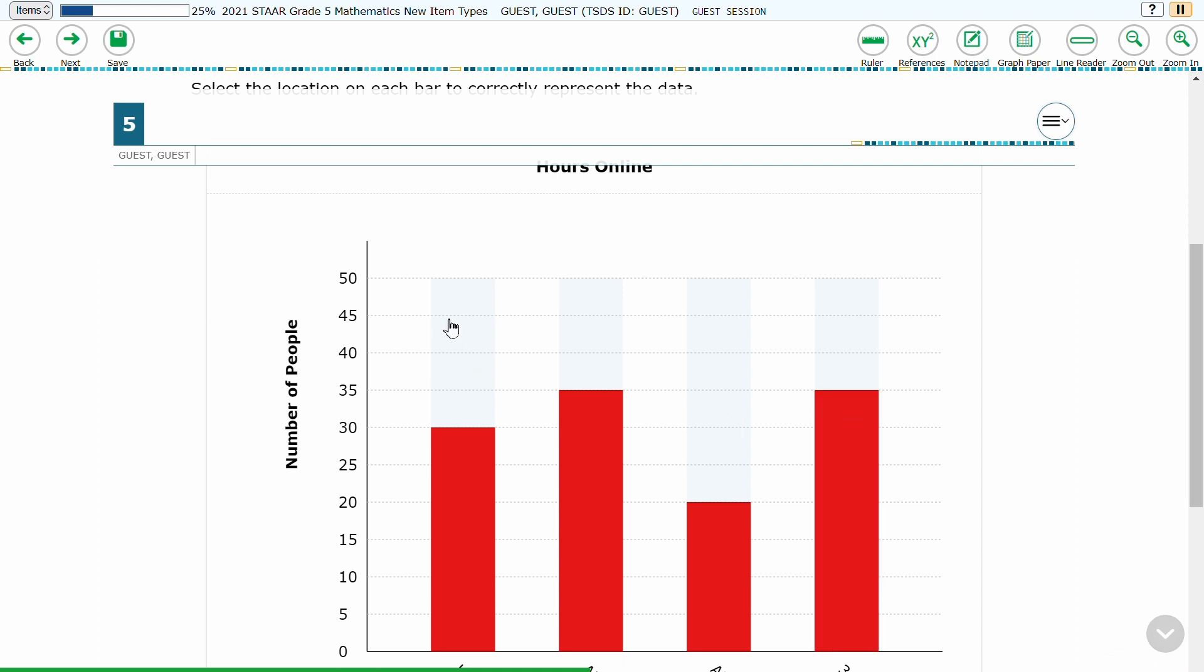The student can change the height of each bar by clicking another location within the shaded area.